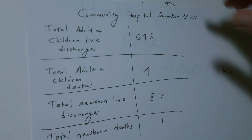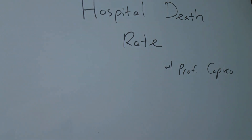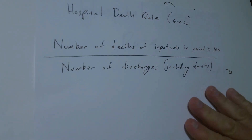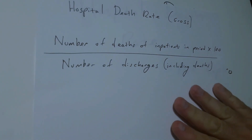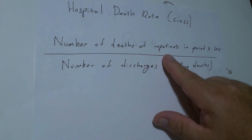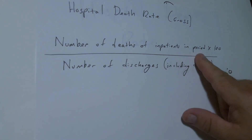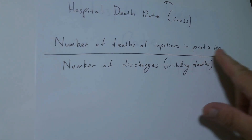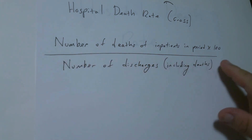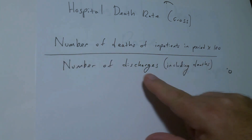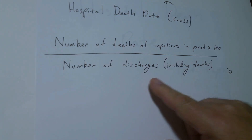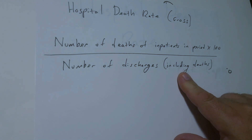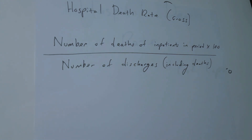The formula we're going to use for hospital death rate gross is equal to the number of deaths of inpatients in the period times 100, divided by the number of discharges — and those discharges are going to include the deaths. So this is how we're going to calculate it.